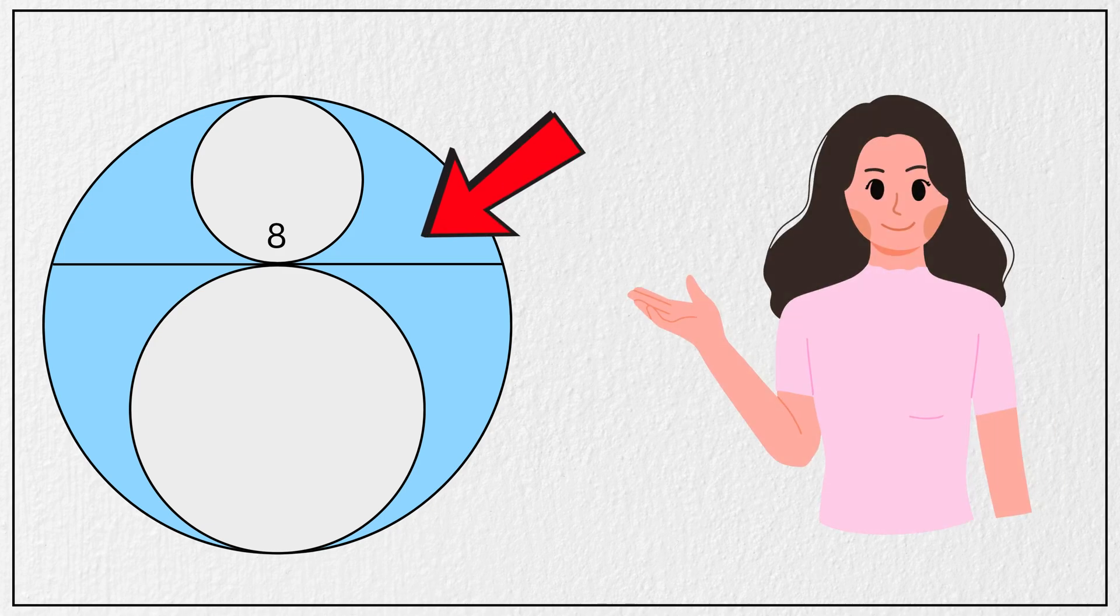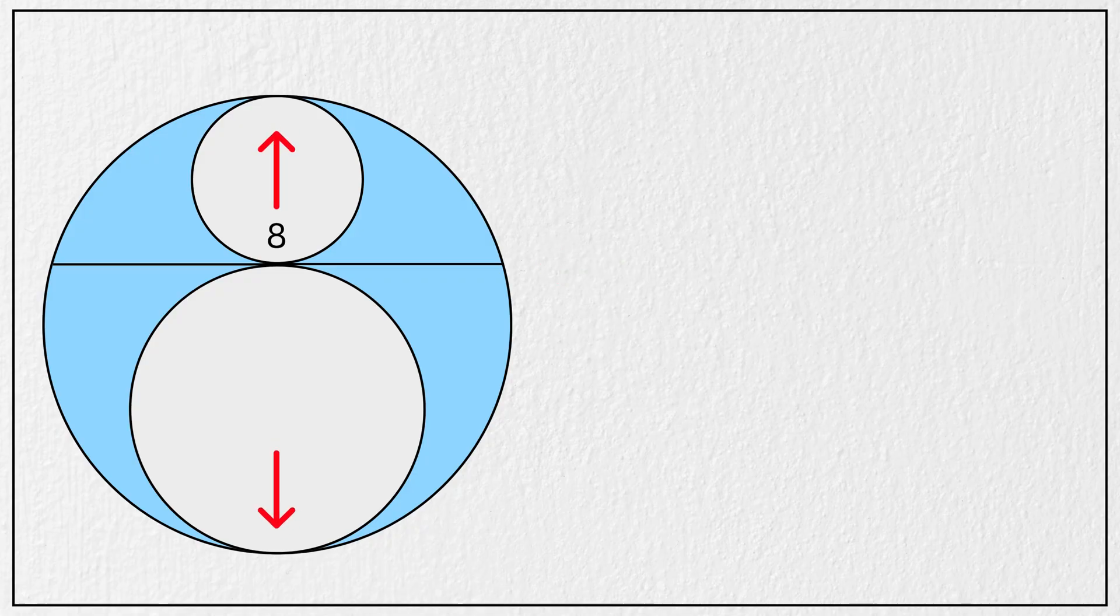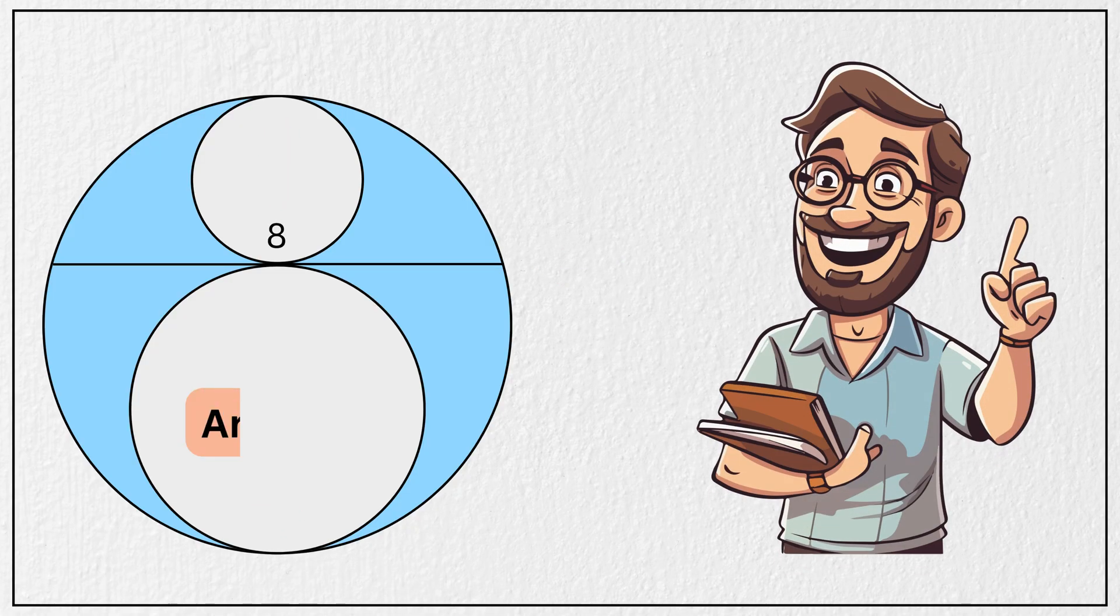Can you solve this tricky geometry question asked in SAT exam? We are given a circle with a chord measuring 8 units. Inside this circle, two smaller circles are placed in such a way that both are tangent to this chord and also to the larger circle, just like this. And the question is to find the area of the blue-shaded region.